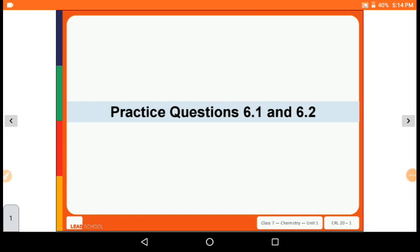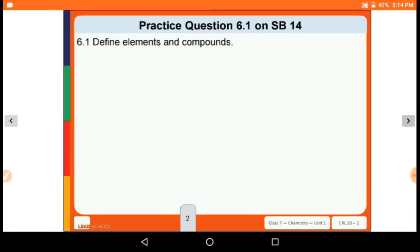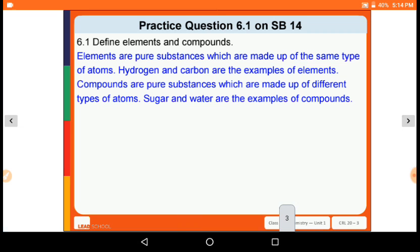Now the next practice question number 6.1: define elements and compounds. Elements are pure substances which are made up of the same type of atoms. For example, hydrogen and carbon are examples of elements. Compounds are pure substances which are made up of different types of atoms. Sugar and water are examples of compounds.